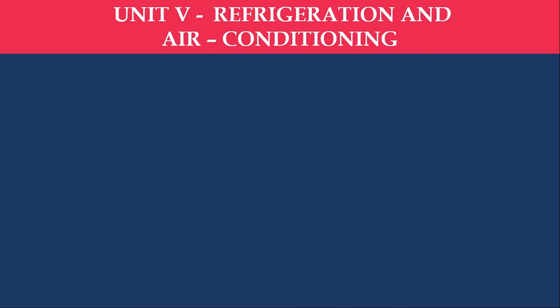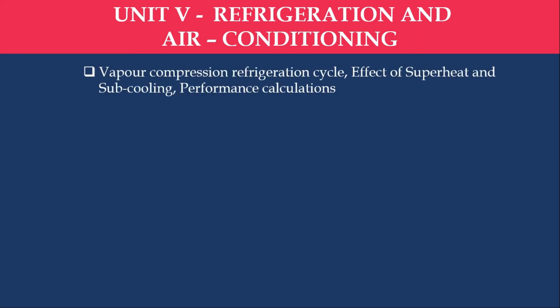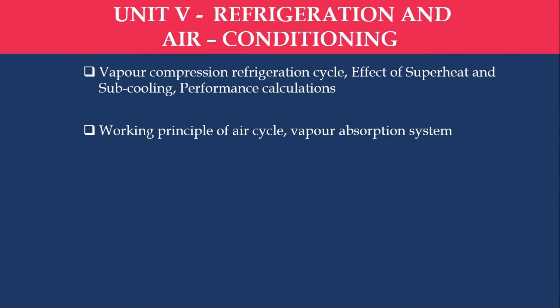The next unit is Unit 5: Refrigeration and Air Conditioning. Half of the unit will cover refrigeration and half will cover air conditioning. In refrigeration, we will study the vapor compression refrigeration system — including superheating and subcooling effects, performance calculation, and theory topics like the air cycle and vapor absorption cycle.